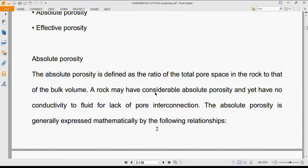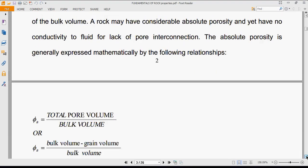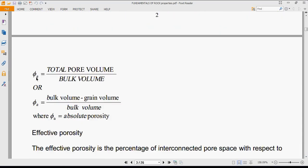A rock may have considerable absolute porosity and yet have no conductivity to fluid for lack of pore interconnection. You might have a rock with very high porosity but if all those pores are not interconnected, it doesn't benefit us. The absolute porosity is generally expressed mathematically by the following relationship.